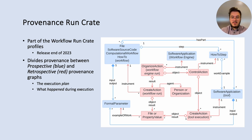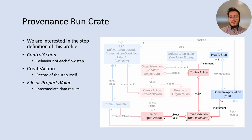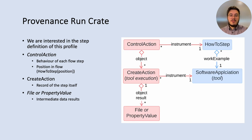The provenance model we're working with is the Provenance Run Crate, part of the Workflow Run Crates from the RO-Crate community. Released near the end of 2023, it divides provenance between prospective and retrospective provenance graphs — or entity graphs — where the prospective is the execution plan used for reuse, and the retrospective is what happened: the results during this instance of the flow and how they relate to the prospective graph. We first identify which entities within this graph relate to a single step execution — this is the subgraph that represents a single step within the Provenance Run Crate.